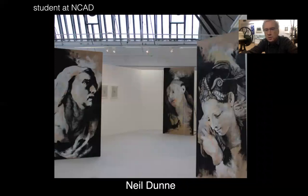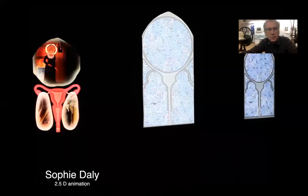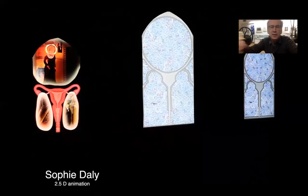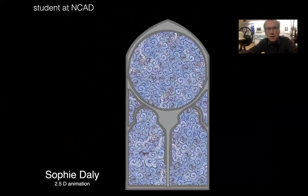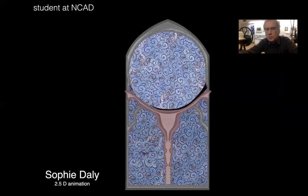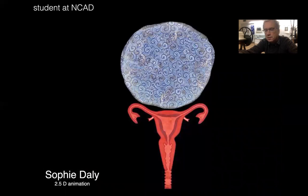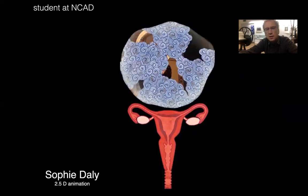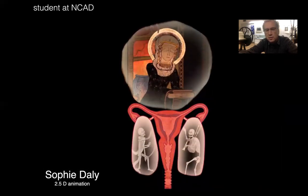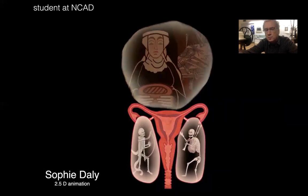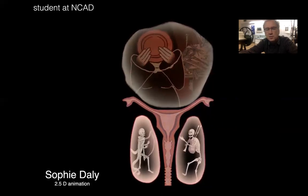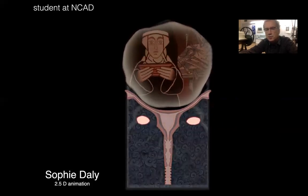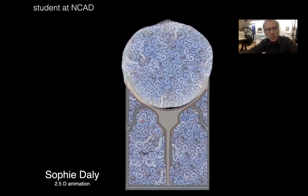Neil Dunn, a former student now teaching in the department, is working on giant screen prints on board. Sophie Daly, working at the time of the Eighth Amendment, is dealing with a curious story of a nun who got pregnant, bringing the historic notion of abortion and the way it was treated by the church into a contemporary context in a very interesting sequence. She's using a process called 2.5 deanimation, where you can float images in virtual space and manipulate them.